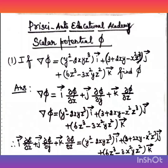Welcome to Prissi and to Educational Academy. In this session, we are going to study scalar potential phi. Given that del phi equals y squared minus 2xyz cubed i-vector plus (3 plus 2xy minus x squared z cubed) j-vector plus (6z cubed minus 3x squared y z squared) k-vector. Find phi. This is a scalar potential problem.